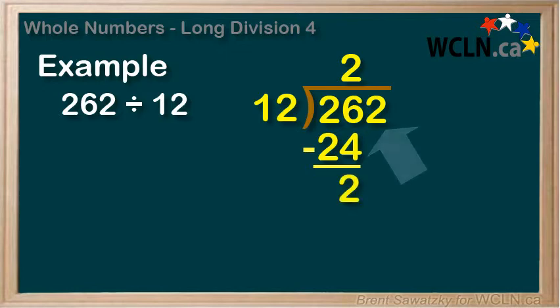And we have a remaining 2 in the dividend. So we'll bring that down. And now we have 22. Can 12 go into 22?